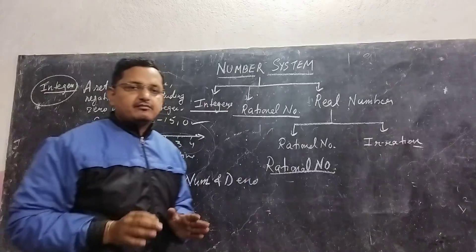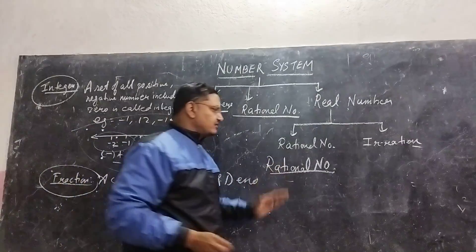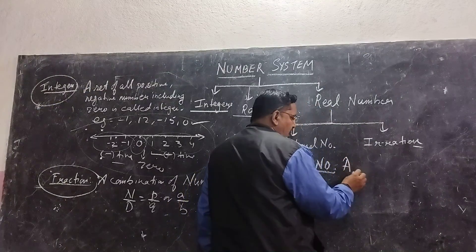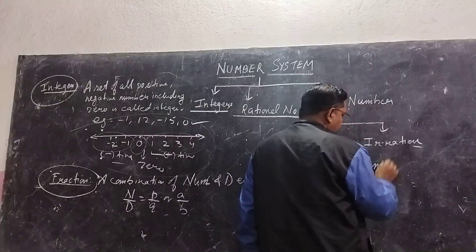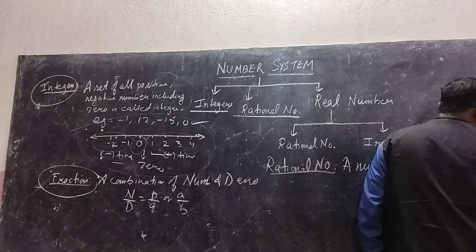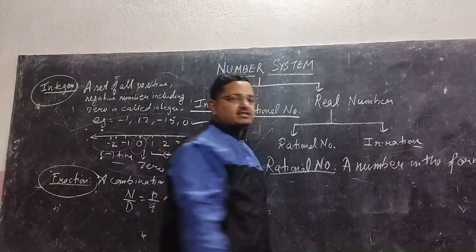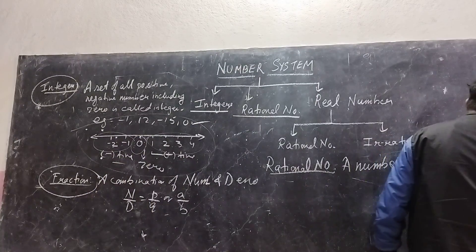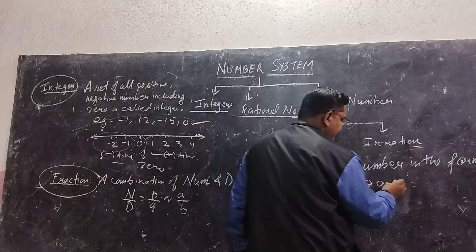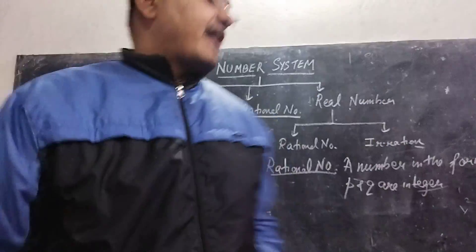Now it will be better to learn about rational numbers. Before explaining the rational number, I will write the definition and then explain it. A number in the form of P by Q, where P and Q are integers — this is the main reason why I explained integers and fractions before writing the definition of rational number.